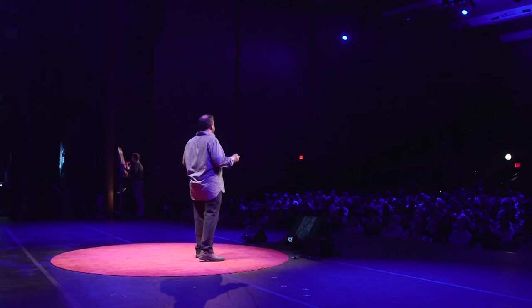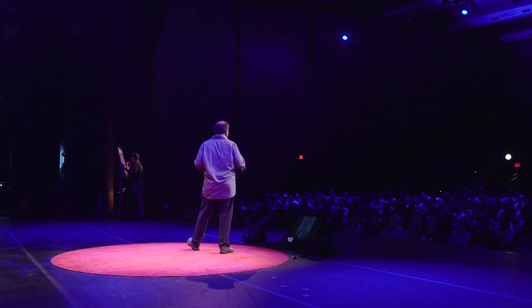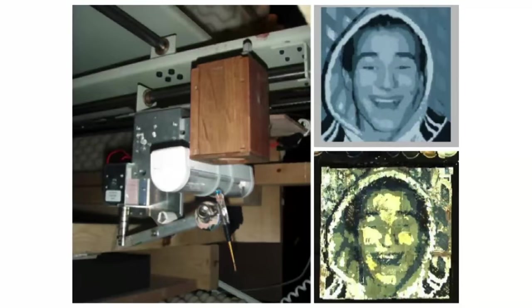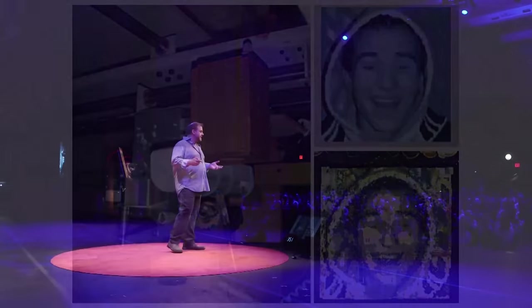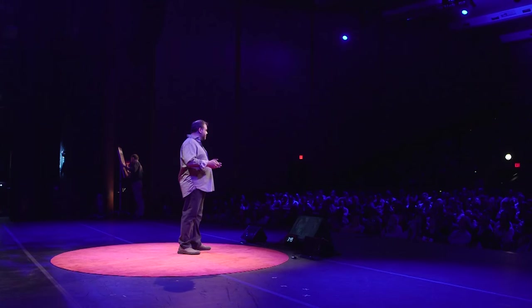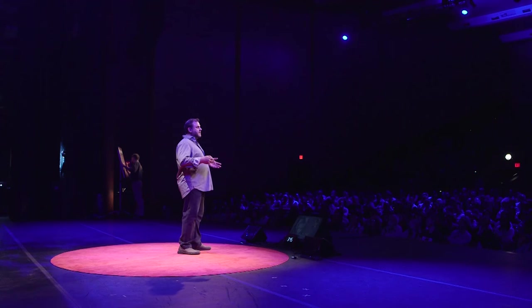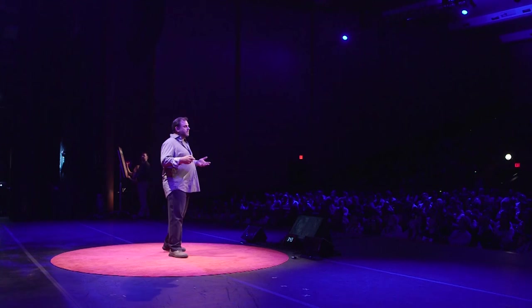I decided I wanted my robots to paint the same way, but there was a problem — my robots were blind. They couldn't see what they were doing. So between my second and third robot, I added a camera and pointed it at the canvas. Now every robot since has been able to watch what it was painting. You can see in this time-lapse how the robot watches what it's painting and makes adjustments.